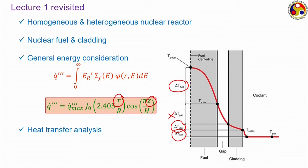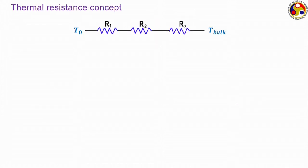By assuming a temperature value for the fuel centerline, we obtained expressions for the temperature at the fuel-cladding interface, at the cladding outer surface, and for the bulk of the fluid. If we neglect the gap between fuel and cladding, we can draw a simple electrical analogy where T_0 is the fuel centerline temperature — the source of energy — and T_bulk is the bulk fluid temperature. In between, there are three resistances through which the heat flux flows.